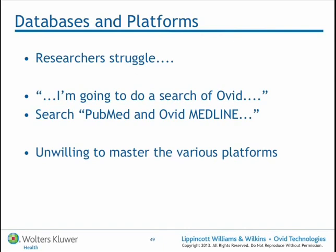This always confounds particularly novice reviewers. By the end of their first systematic review, they have a much better grounding in the difference between the database they're searching and the search platform used to search the database. I've heard so many times: 'I'm going to search PubMed and Ovid Medline' — looking at these as two separate databases. This is another big problem, and it's where we really rely on research librarians to master the different wildcard characters and tricks to make the search strategy as sensitive and specific as possible.